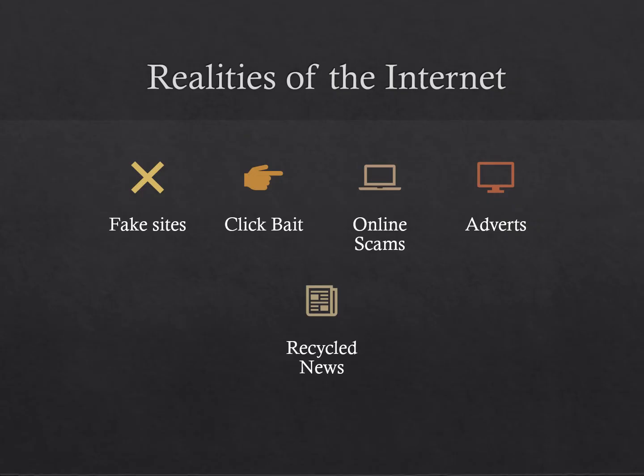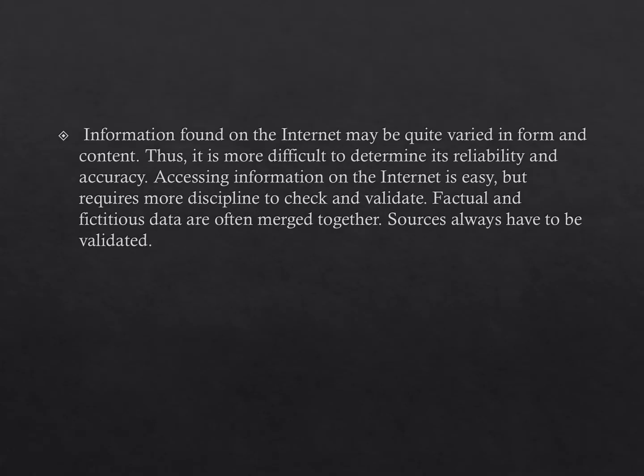The realities of the Internet are that there are many fake sites. We have clickbaits, online scams, adverts, and recycled news, so we have to watch the information we gather very carefully. Information found on the Internet may be quite varied in form and content, making it more difficult to determine its reliability and accuracy. Accessing information on the Internet is easy, but it requires more discipline to check and validate. Factual and fictitious data are often merged together, so sources always have to be validated.